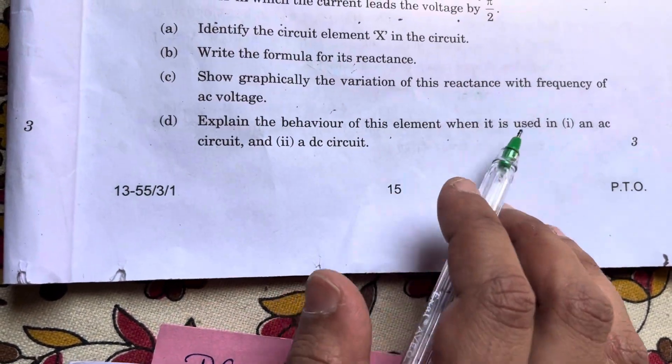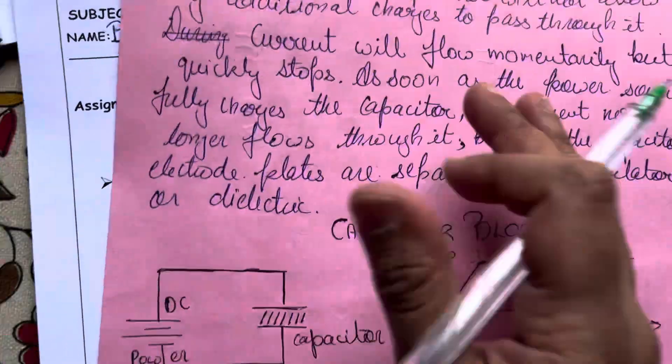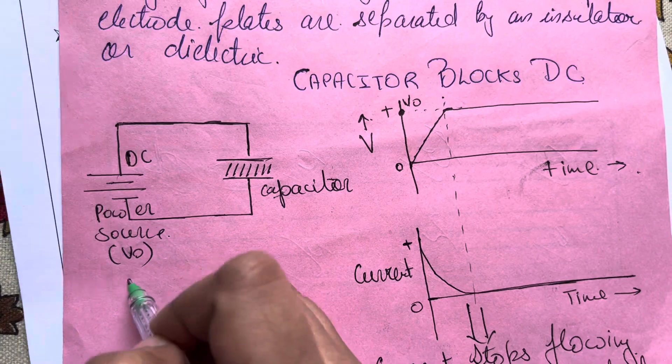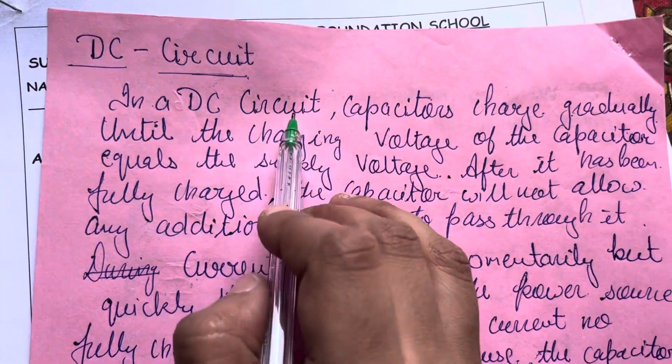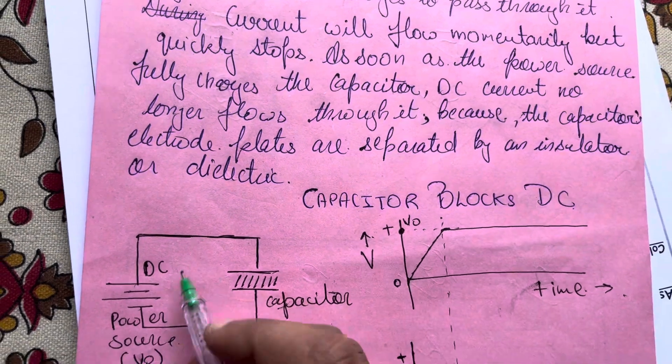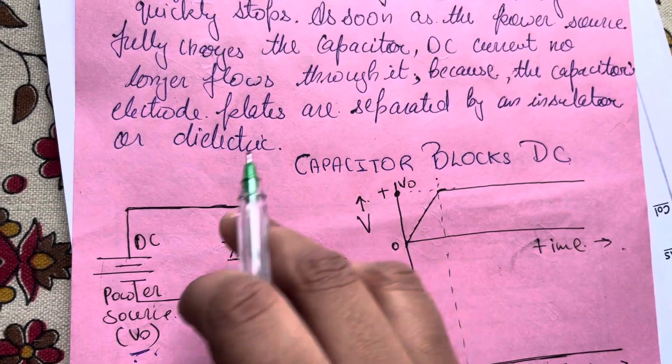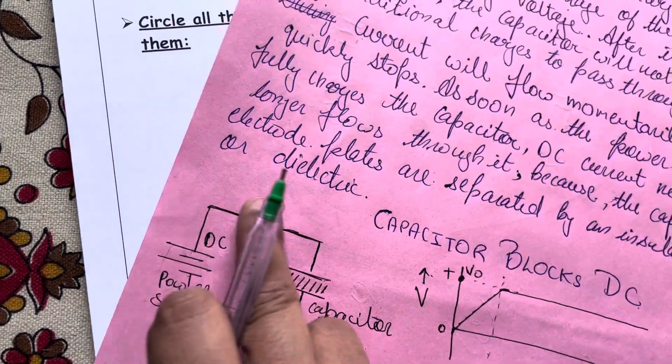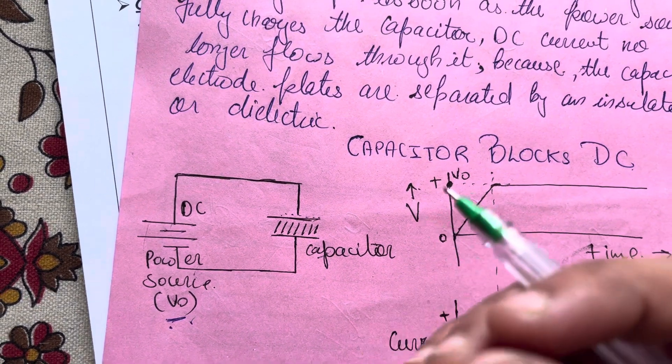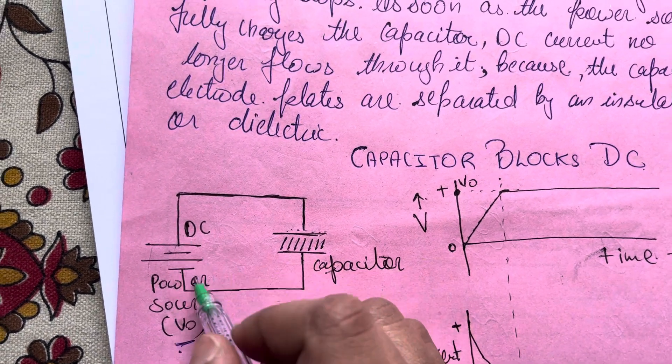Next, explain the behavior of this element when it is used in AC or DC. Suppose if you use a DC capacitor, the capacitor has a dielectric. The capacitor is in DC power supply having a voltage of V₀. What will happen? In a DC circuit, the capacitor will charge gradually until the charging voltage of the capacitor equals the voltage supplied. So you can see that the voltage of this battery is V₀. Initially, you will have an uncharged capacitor, so the battery will supply charge to the plates.